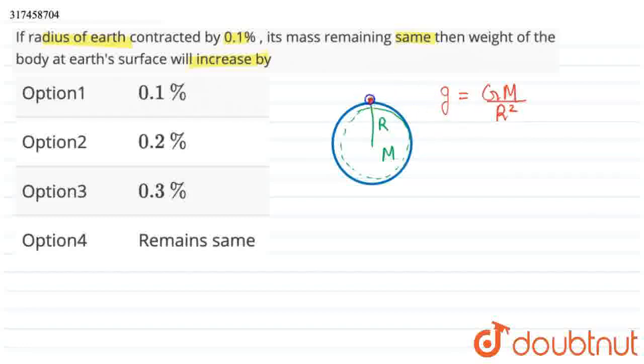Suppose that there is an object on the surface of Earth. According to Newton's second law, the force will be equal to mg, because Newton's second law says mass into acceleration of the body equals the force, so this is mg. And according to Newton's universal law of gravitation, the force is equal to GM upon r².